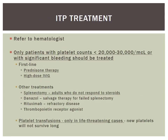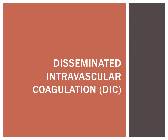Patients with ITP should be treated by a hematologist. Treatment is typically not initiated unless the count drops below 20,000 to 30,000 or there is significant bleeding. First-line treatments include prednisone therapy and high-dose IVIG. Other options include splenectomy if prednisone fails, danazol, rituximab, and thrombopoietin to increase platelet production. Platelet transfusions are only done in very severe life-threatening cases, as the new platelets will not survive long due to antibody destruction.